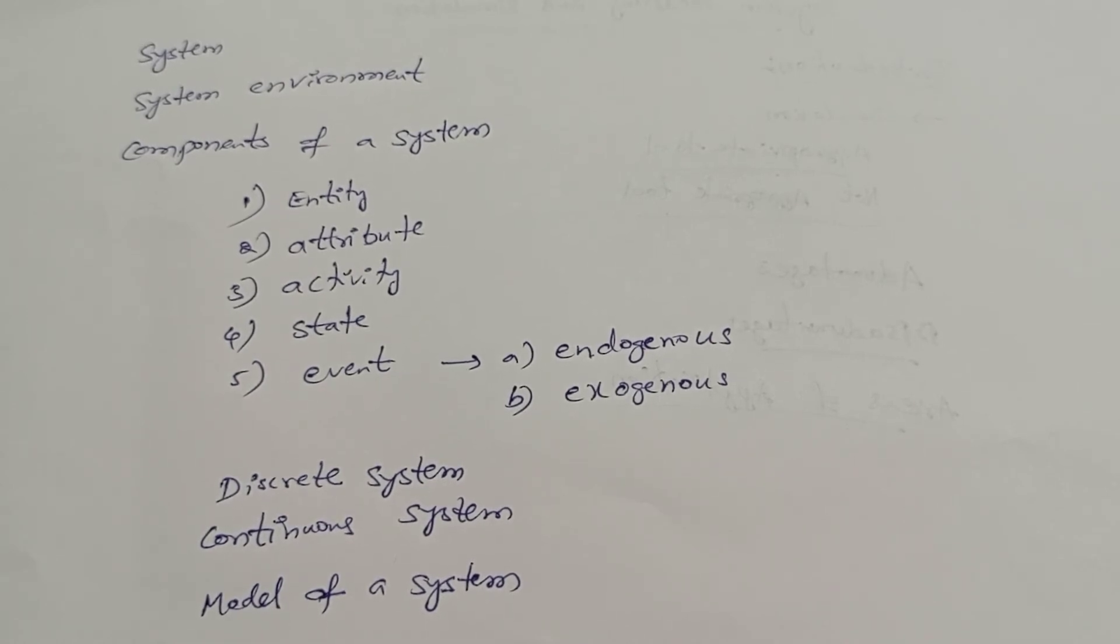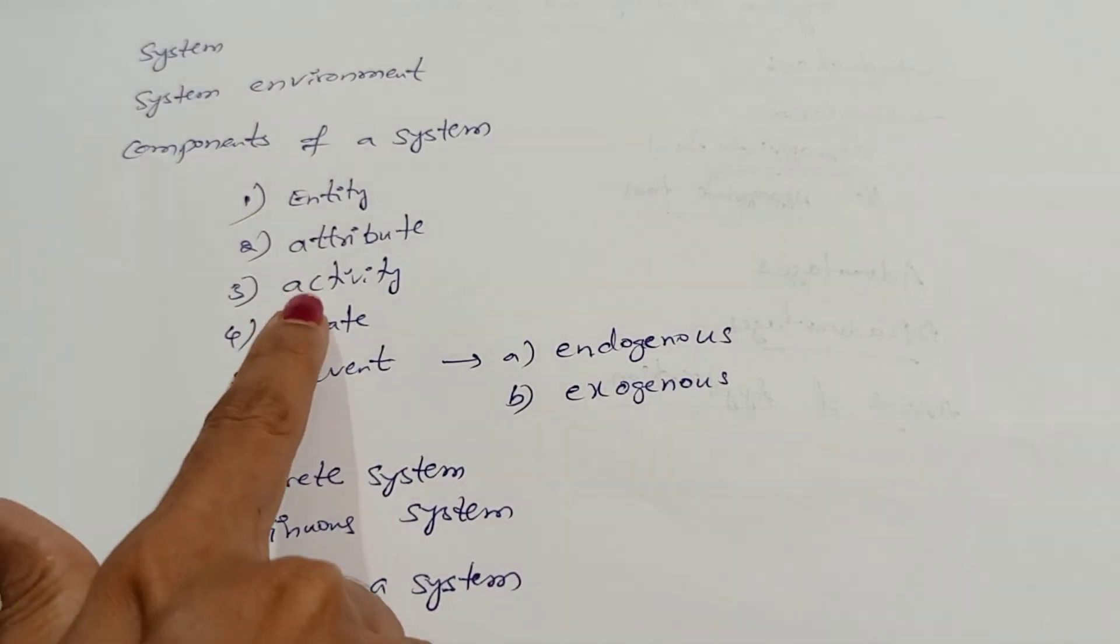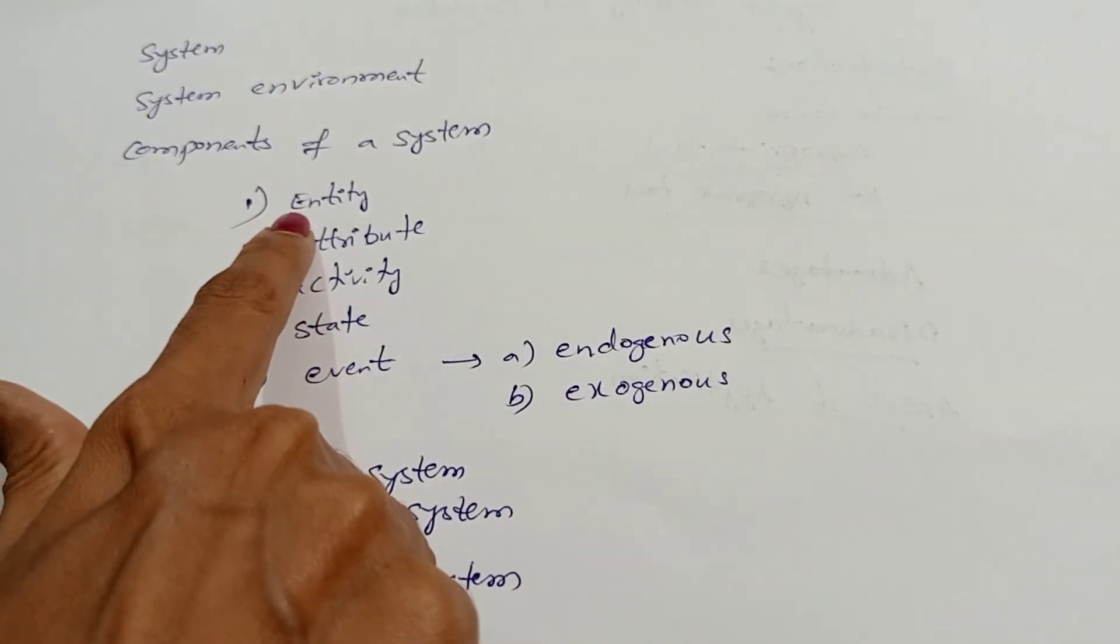Coming to event. Under this, we are having endogenous event. Endogenous event is used to describe activities and events, both of which we have already described.